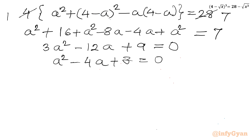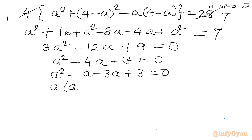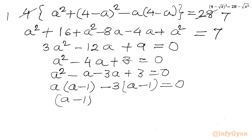This is a quadratic equation. Solving by factorization, I split -4a as -a - 3a: (a² - a) + (-3a + 3) = 0. Taking a common from the first two terms and -3 from the last two: a(a - 1) - 3(a - 1) = 0, giving (a - 1)(a - 3) = 0.